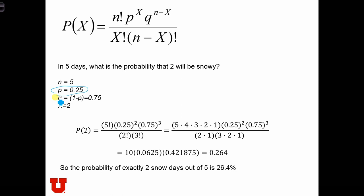So here, p is 25%. And q is always going to be 1 minus p, which is equal to just 0.75.